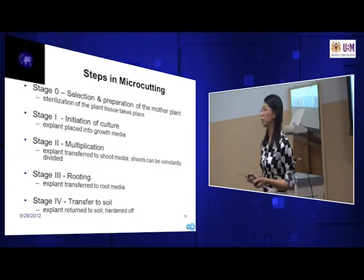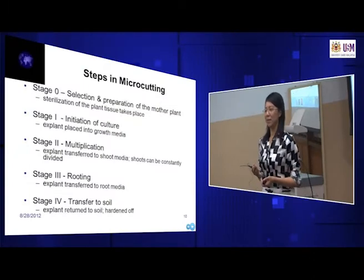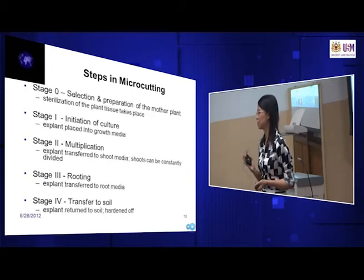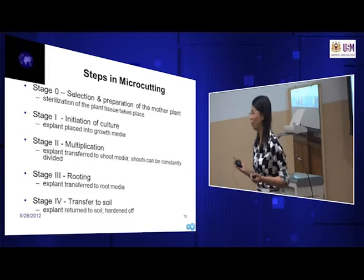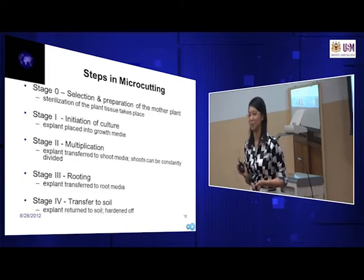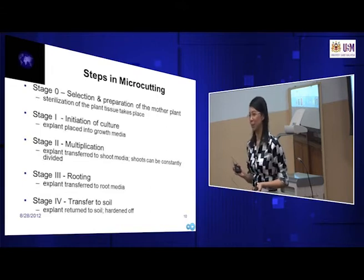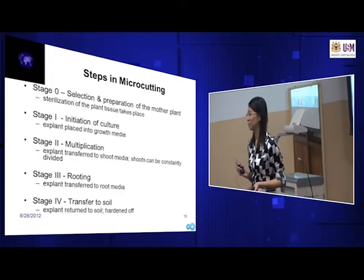Now the steps in microcutting: step zero — the first step is selection of the mother plant. You're not going to select a highly diseased mother plant. We select a plant of good source — no diseases, no virus, and depending on our objectives, proven to maybe flower well. Later I'll show another video on why we need plant tissue culture — not just for food production, but also for exotic plants production like Rafflesia.